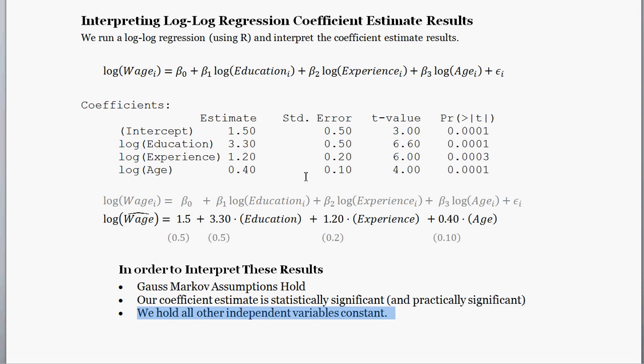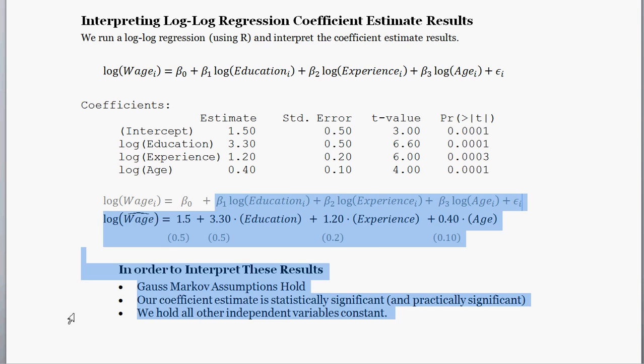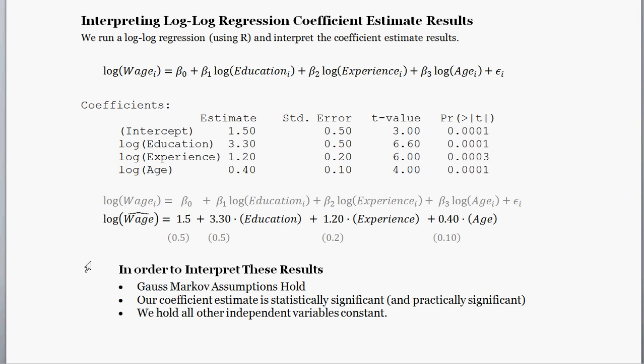And lastly, when we interpret, say, beta 1 here, the effect of education on wages, we are going to need to hold our other variables, experience and age, we need to hold the other variables in our multivariable regression constant. So if we can agree to these assumptions, we can then get to interpreting beta 1.